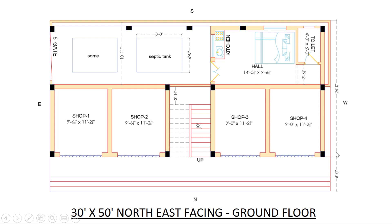It has a width of 30 feet, but in the ground floor we consider up to 24 feet, and 6 feet is of platform. The slab is extended to 6 feet but the column in the ground floor is up to 24 only. This is a ground floor plan with dimensions of 30 feet width and 50 feet length. It has two roads — north side and east side.